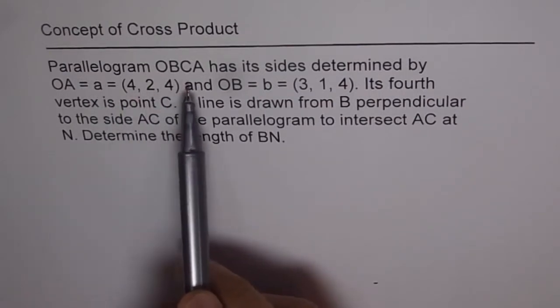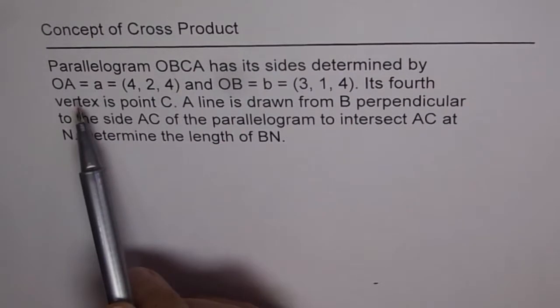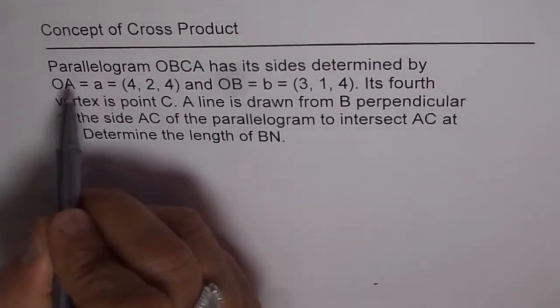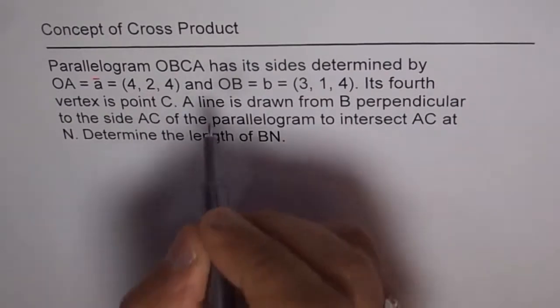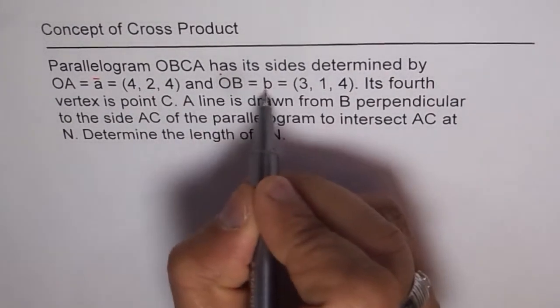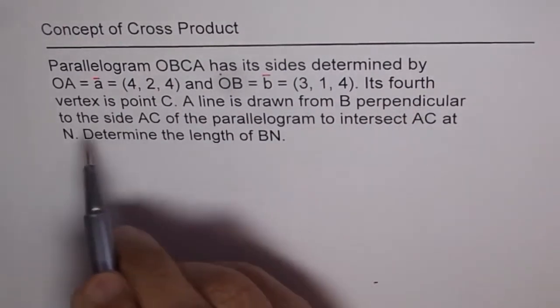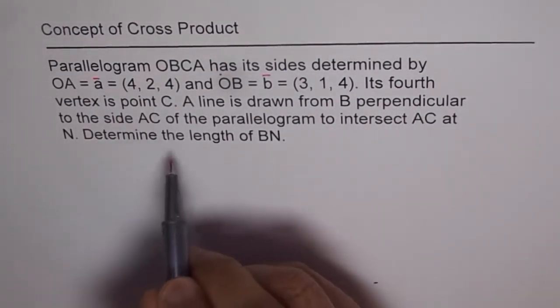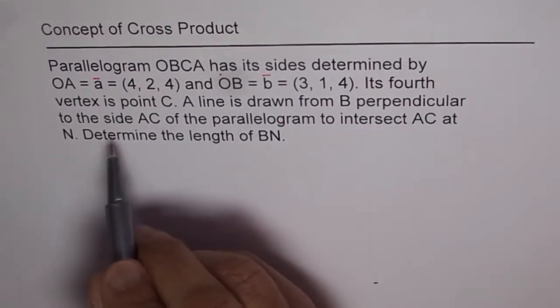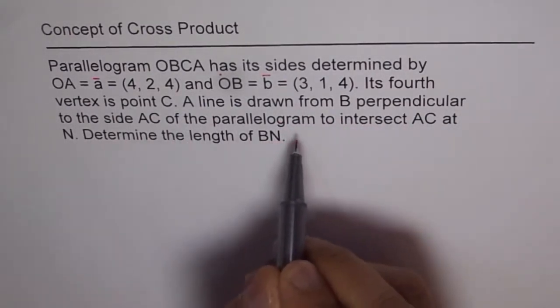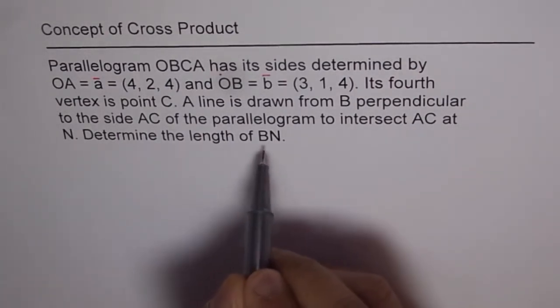The question is: parallelogram OBCA has its sides determined by vector OA = (4, 2, 4) and OB = (3, 1, 4). Its fourth vertex is point C. A line is drawn from B perpendicular to the side AC of the parallelogram to intersect AC at N. Determine the length of BN.